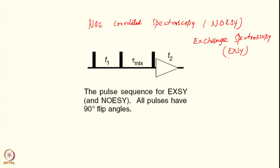The spectra appear in the same manner and the pulse sequence is the same for both, so you can get both kinds of information in this spectrum. By and large it is NOESY which is used for structural purposes for large and small molecules, while exchange spectroscopy is limited to situations where there is actual chemical exchange between two conformations.